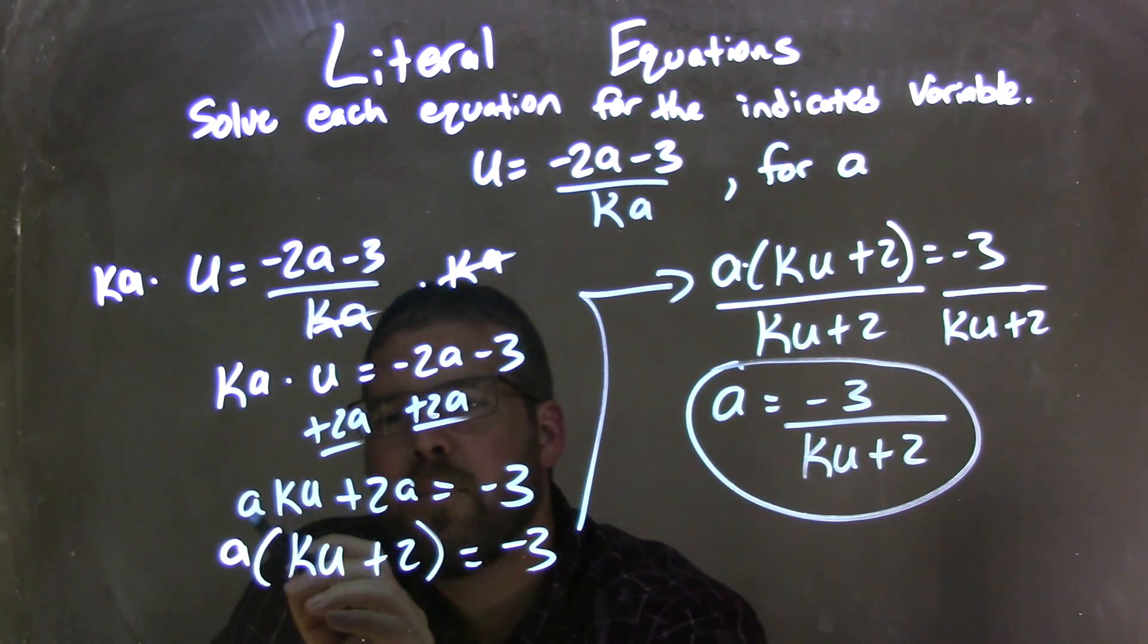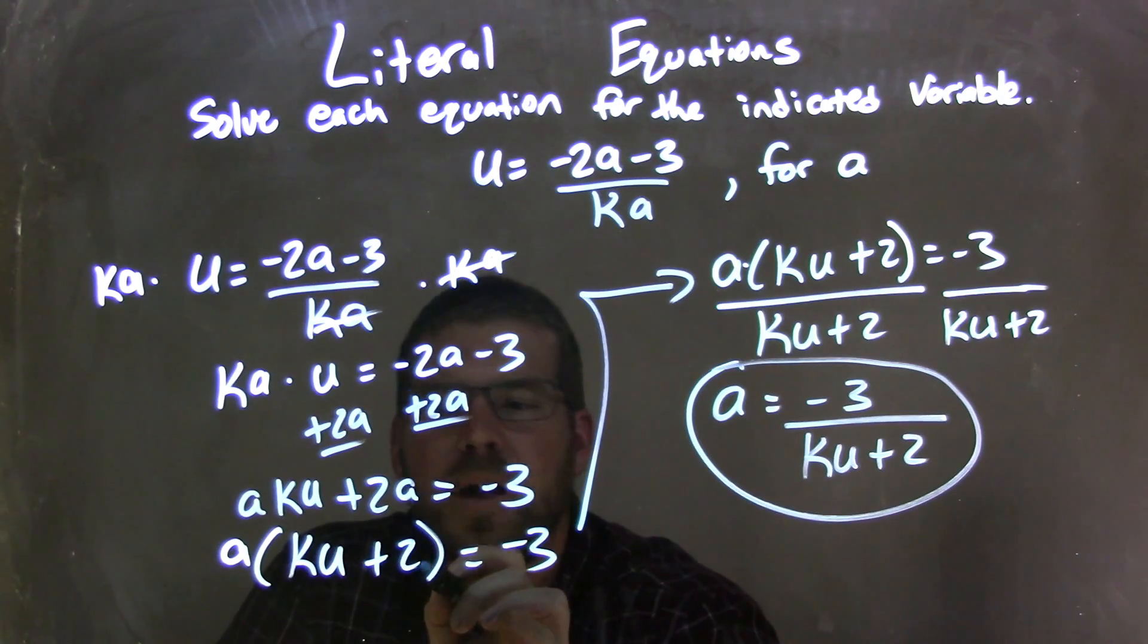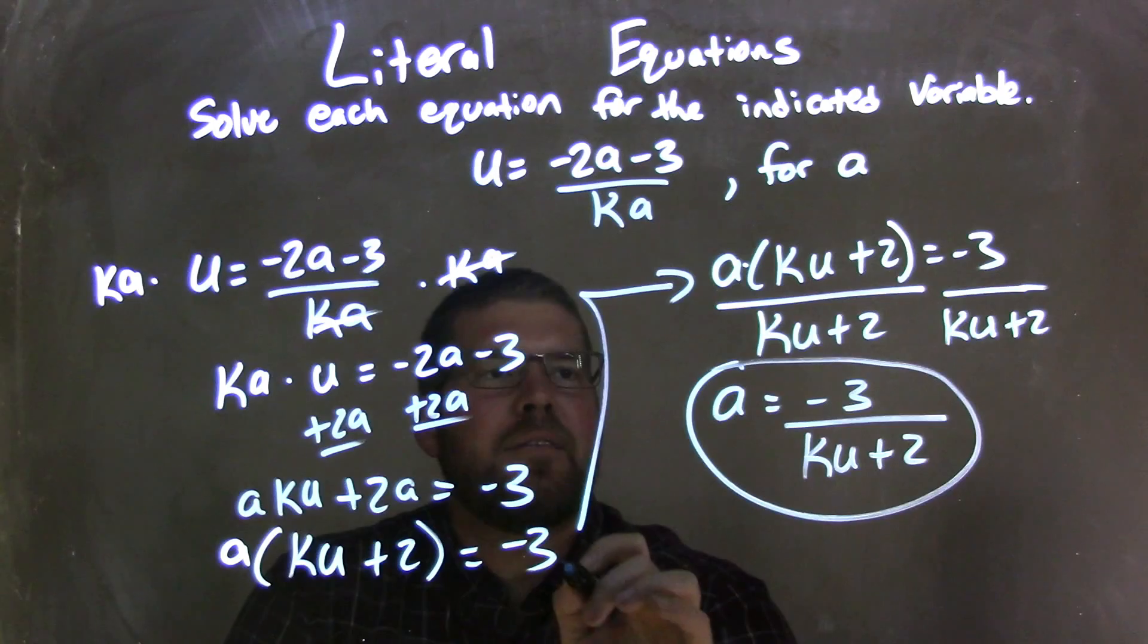From there, I saw that I could pull an a out of both parts, leaving me with a times parenthesis ku plus 2, and we can see that if I distributed the a back in, I'd be given what's up above, and that's equal to negative 3.